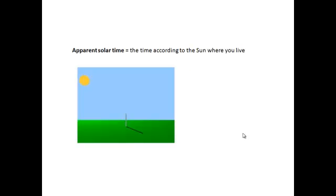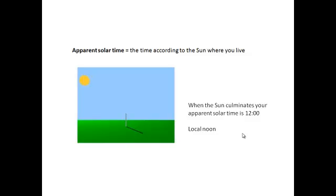Apparent solar time is the time according to the sun where you live. If I put a stick in the ground, throughout the day the length of the shadow will get shorter. Around midday it will be at its shortest and then get longer again. When the sun is at its highest in the sky, the shadow is shortest — we call that local noon. That's when our apparent solar time is midday.